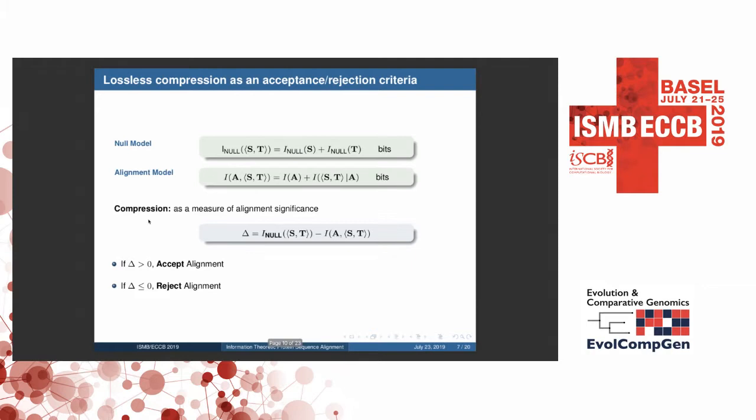So now that we have an alignment model, how do we actually accept or reject an alignment? This can be done by using the inherent acceptance rejection criteria that is given by MML paradigm. It is actually the lossless compression. So if we take the difference between the null model and the alignment model, we can actually check if there's a compression gain. If so, we can accept the alignment. And otherwise, we can reject the alignment.